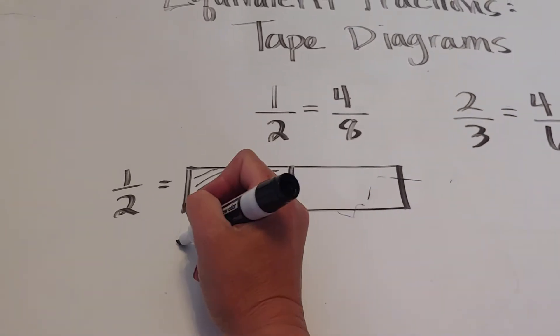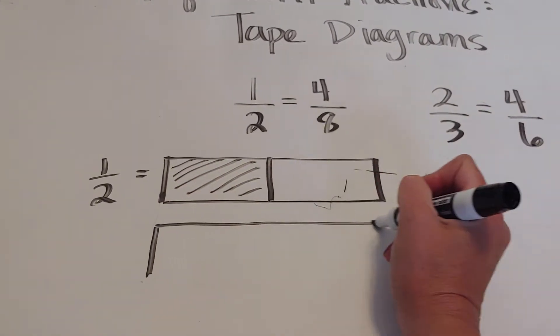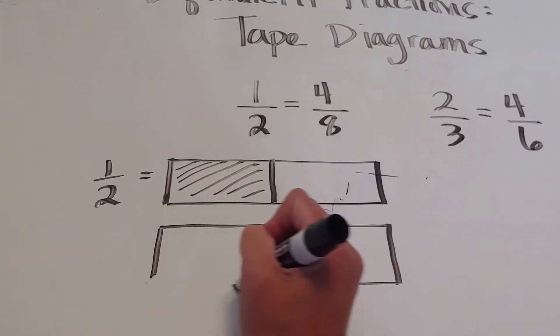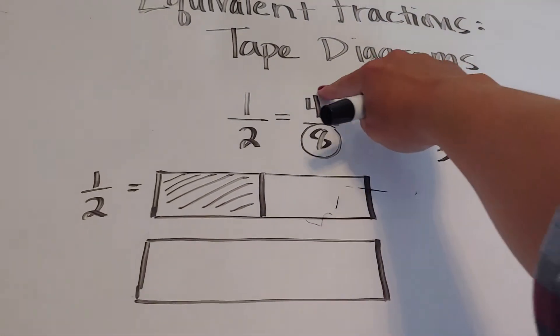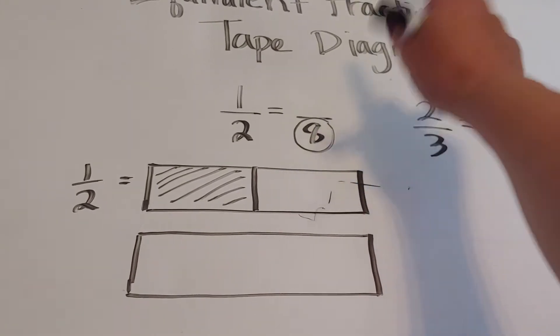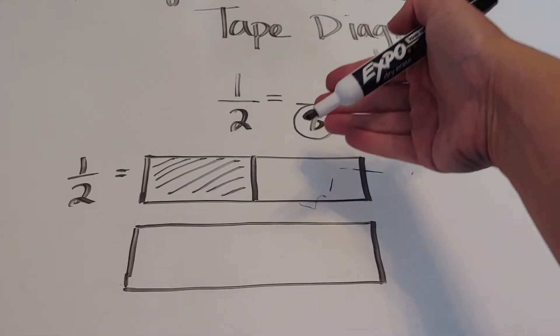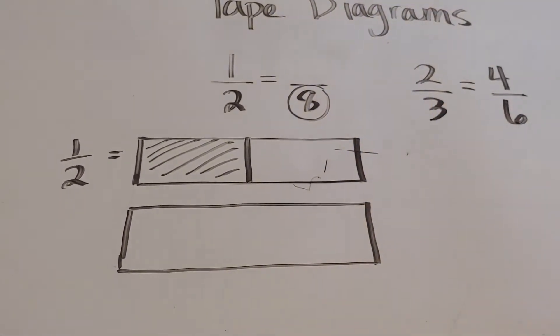Now what we'd like to do is we'd like to take this same exact shape but now cut it into a denominator of 8. So if you think about it, maybe this is the problem that we're asking: one half is equal to how many with the denominator of 8.